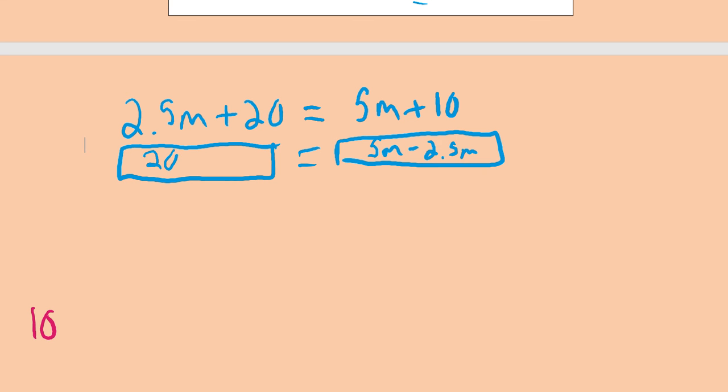Over here you're going to have a 20. The 10 comes over here. You're going to make it negative. So it's 20 minus 10. That gives you 10 is equal to 5 minus 2.5. That's like saying $5 minus $2.50. That's going to be, you're left with $2.50. So it's 2.5m.